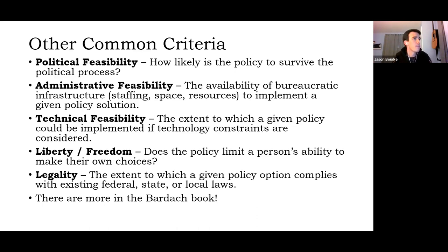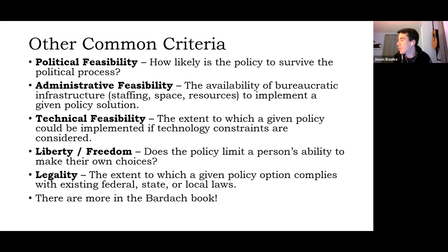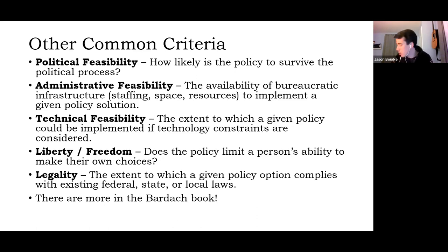Administrative feasibility deals with the bureaucratic infrastructure — staffing, space, and resources needed to implement a policy solution. We might have a great idea for a program providing youth activities, but if that program requires 15 additional staff to implement, that's a mark against it in terms of administrative feasibility. The bureaucratic infrastructure may not be there, or even if we could hire more people, we may not have the office space to accommodate 15 more staff members.